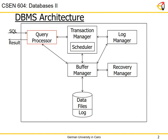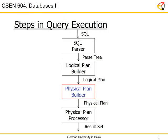We looked in last lecture at the logical plan builder. We talked about how the logical plan is built, the two techniques for query optimization using heuristics and cost-based optimization. The output from the logical plan builder is the selected logical plan or relational algebra tree that is considered to be most efficient.